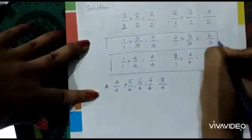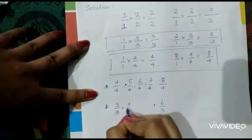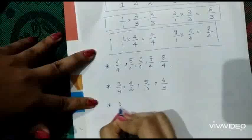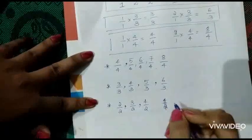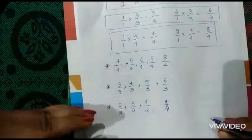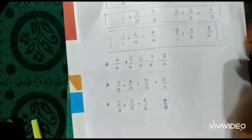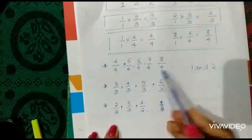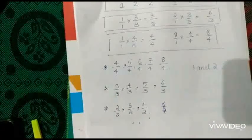Similarly, between 3/3 and 6/3, the numbers are 4/3 and 5/3. Between 2/2 and 4/2, the number is 3/2. We can multiply 1 and 2 with any number to find rational numbers between them. So the rational numbers between 1 and 2 include 4/4, 5/4, 6/4, 7/4, 8/4, or 3/3, 4/3, 5/3, 6/3, or 2/2, 3/2, 4/2.